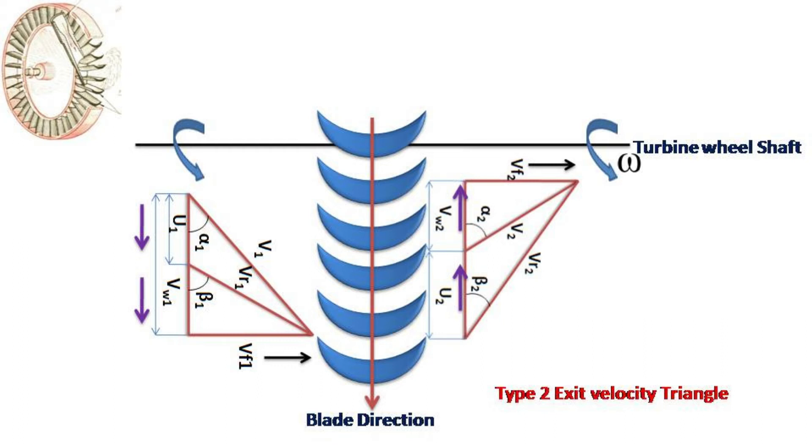u1 is in the direction of blade movement whereas u2 is in the opposite direction. Similarly, vw1 is in the direction of blade movement but vw2 is in the opposite direction in velocity triangles.